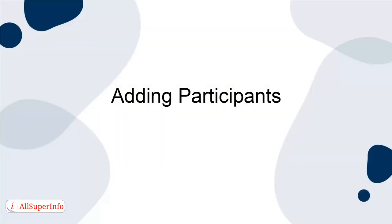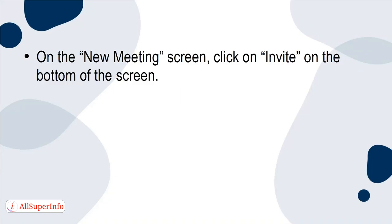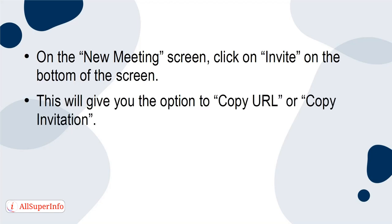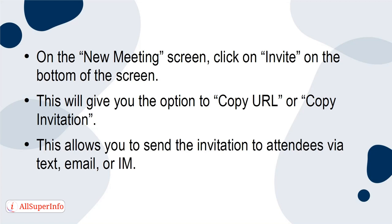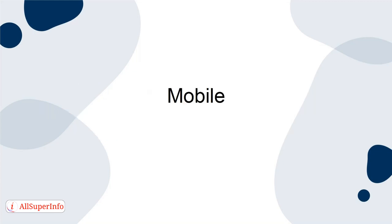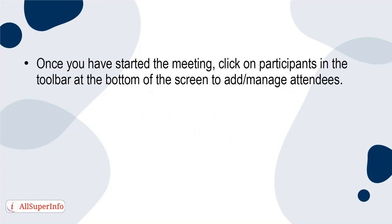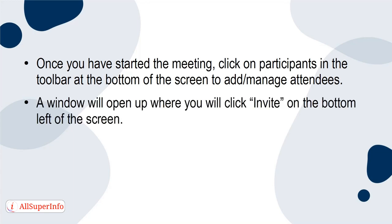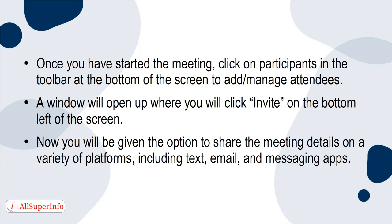Here are the steps for adding participants to your meeting. Desktop: On the New Meeting screen, click on Invite at the bottom of the screen. This will give you the option to Copy URL or Copy Invitation, allowing you to send the invitation to attendees via text, email, or IM. Another option is to email attendees through your preferred email service via the Zoom app. Mobile: Once you've started the meeting, click on Participants in the toolbar at the bottom of the screen to add or manage attendees. A window will open where you will click Invite on the bottom left of the screen. You will then be given the option to share the meeting details on a variety of platforms including text, email, and messaging apps.